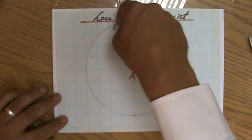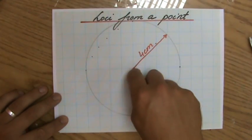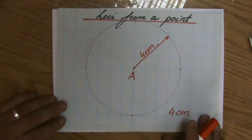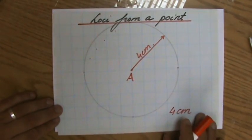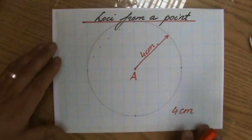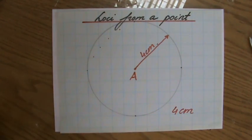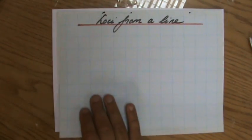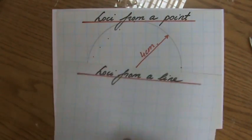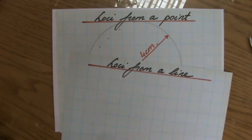All the points on the circumference are four centimeters away from point A. Like and share if this was useful to you, then I can help your friends too. Check my site, explainingmaths.com, where you'll find all my resources nicely organized. We're now going to look in the next video at loci from a line as opposed to loci from a point. I'll see you there. Bye-bye.